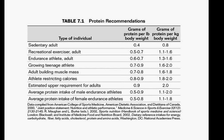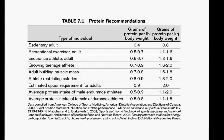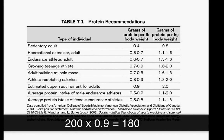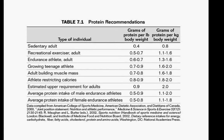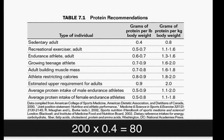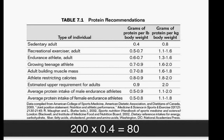What if our 200-pound athlete was a growing teenager? What do you get when you multiply 200 pounds times 0.9? 180 — correct. That's his upper limit. Now, how many grams of protein would our 200-pound person need if they were a sedentary adult? 80 grams is the correct answer. 0.4 times 200 equals 80.